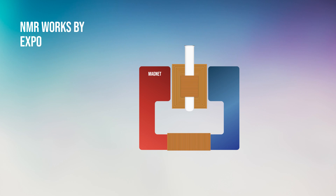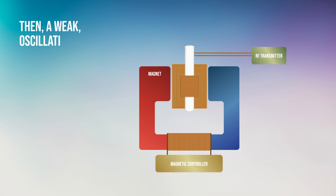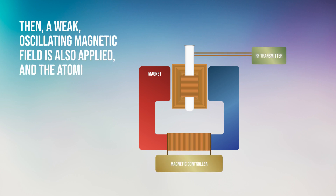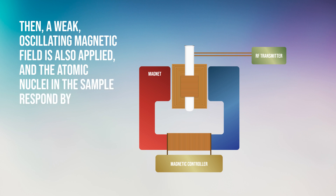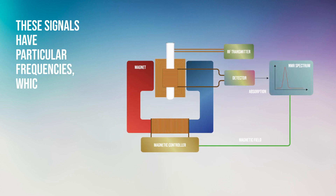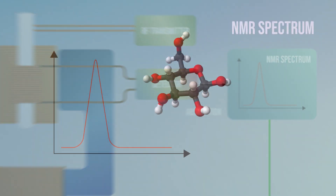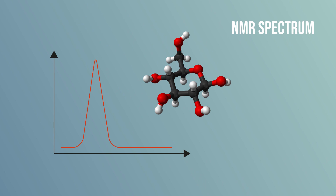NMR works by exposing a sample to a strong, constant magnetic field. Then, a weak, oscillating magnetic field is also applied, and the atomic nuclei in the sample respond by emitting electromagnetic signals. These signals have particular frequencies, which scientists can use to identify atoms and their positions within molecules, allowing them to figure out what molecules are in the sample.